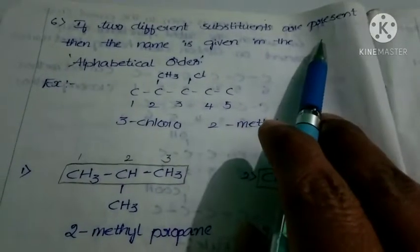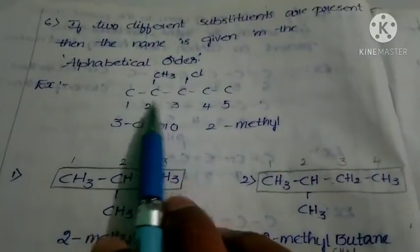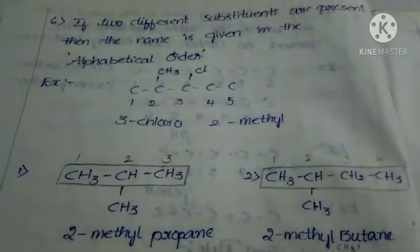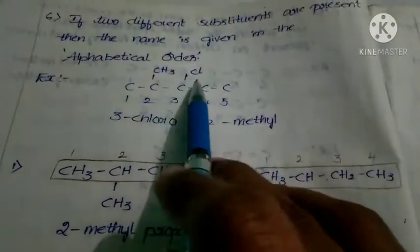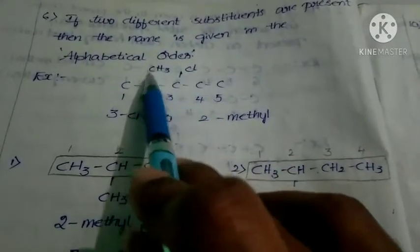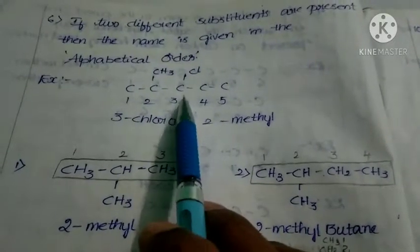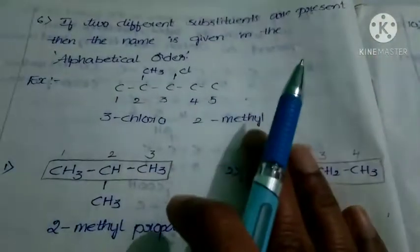The last rule: if two different substituents are present, the name is given in alphabetical order. For example, in a given organic compound, if CH3 and Cl are present as substituents, chlorine comes first because C comes before M in alphabetical order. Chlorine is present on the third carbon and methyl on the second, so the name starts with 3-chloro-2-methyl. You have to remember all these rules to write an IUPAC name.